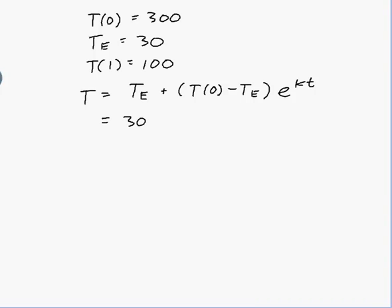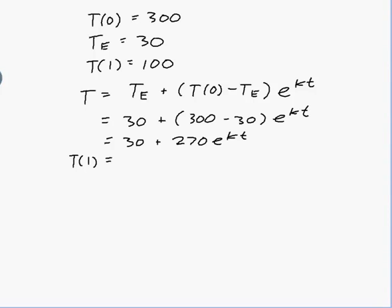My formula was T equals Tₑ plus (T(0) minus Tₑ) times e to the kt. Tₑ is 30 and T(0) is 300, so that gives 30 plus 270 e to the kt. Now using T(1) = 100: T(1) = 30 plus 270 e to the k times 1, and that equals 100.